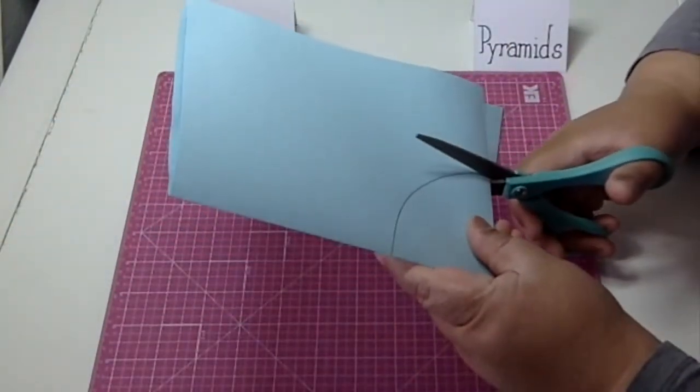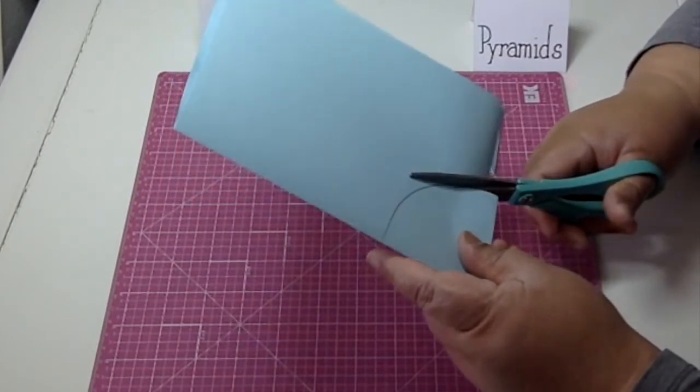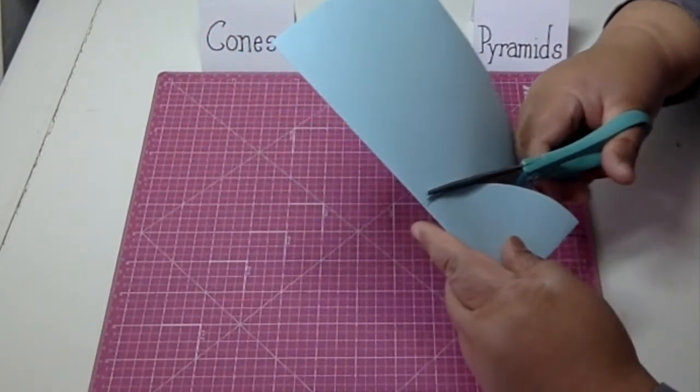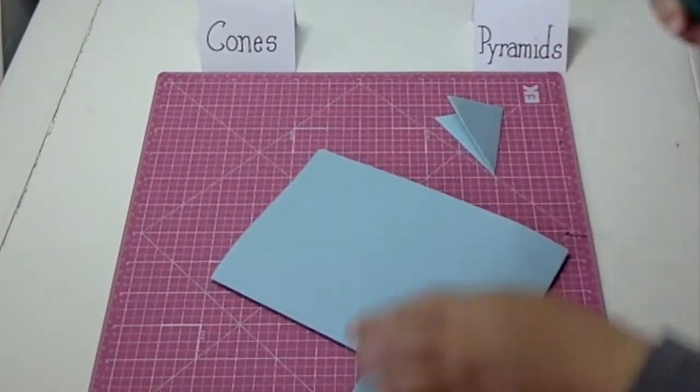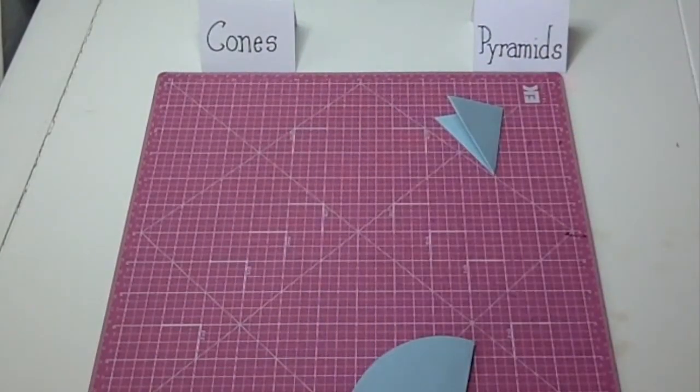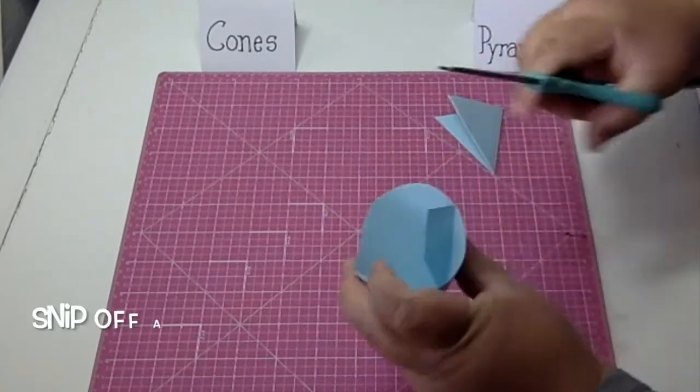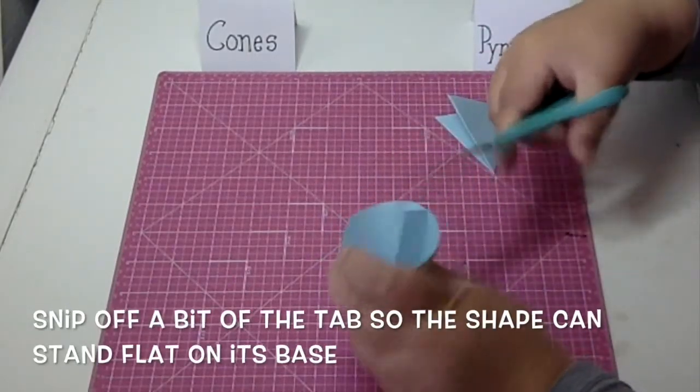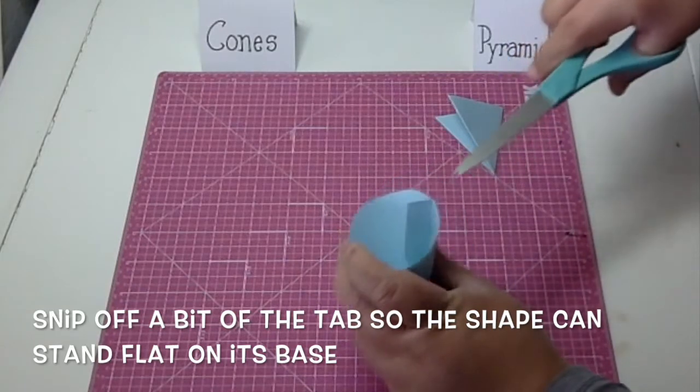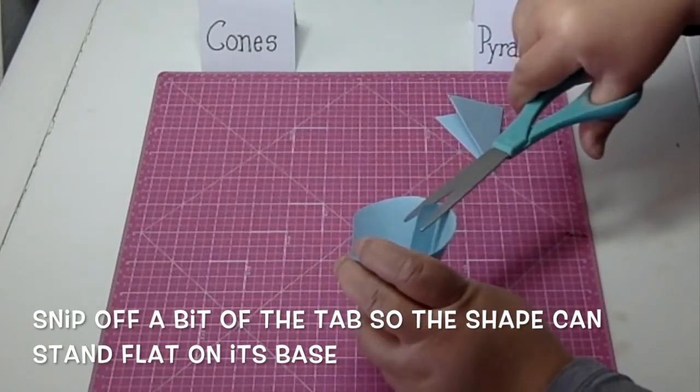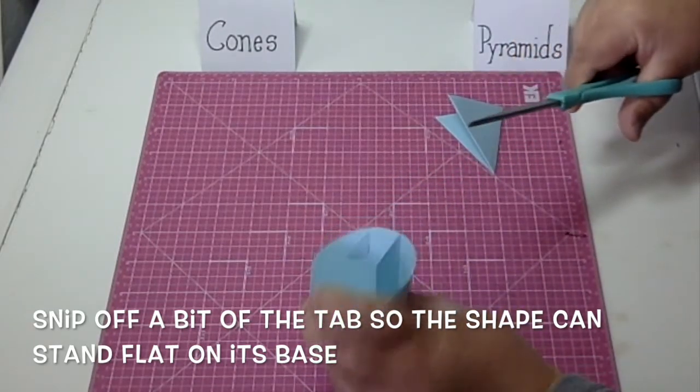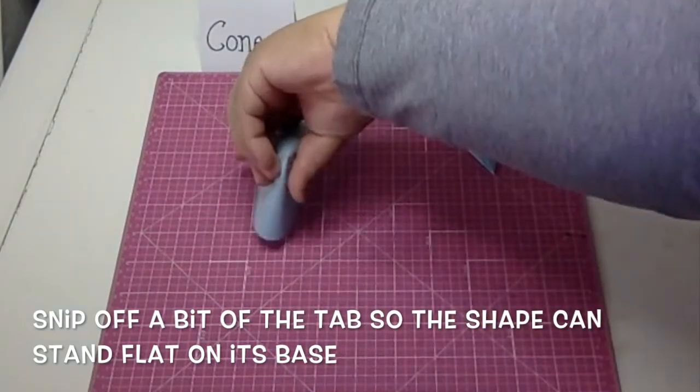Just one last thing here: see the tab, how it kind of pokes out here? I'm going to snip off a bit of that tab so that the shape can stand flat on its base.